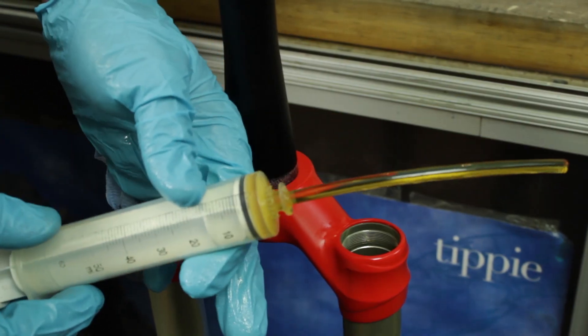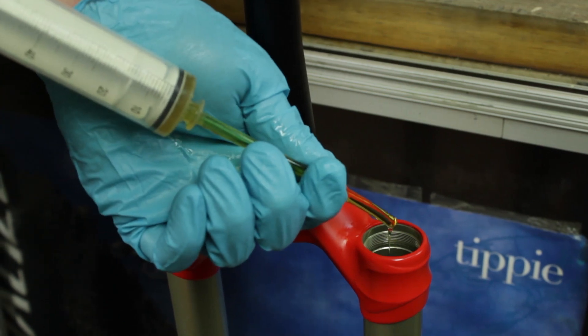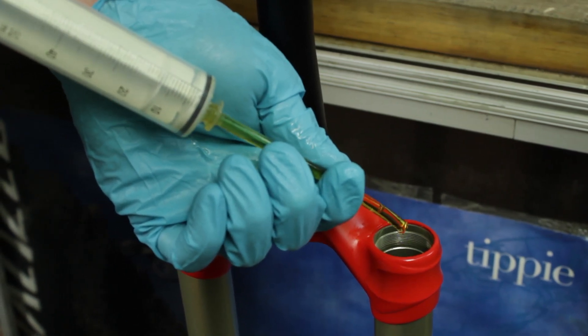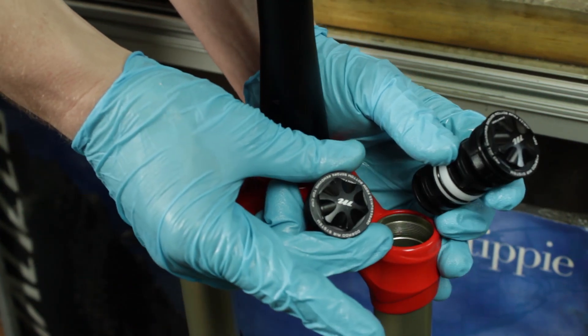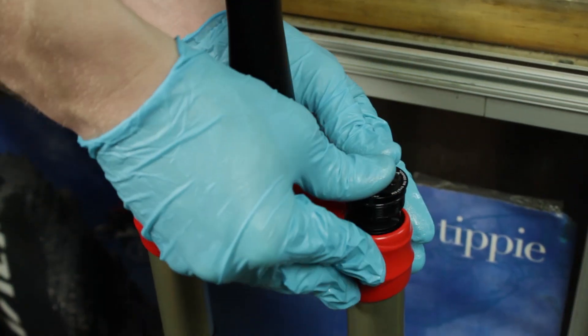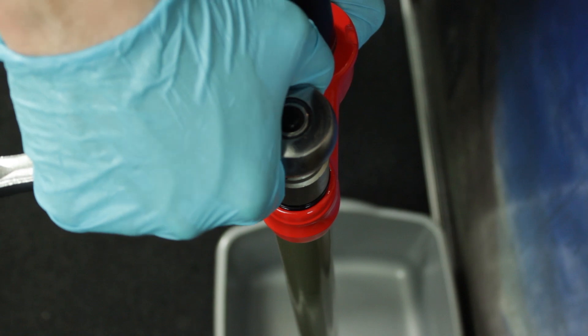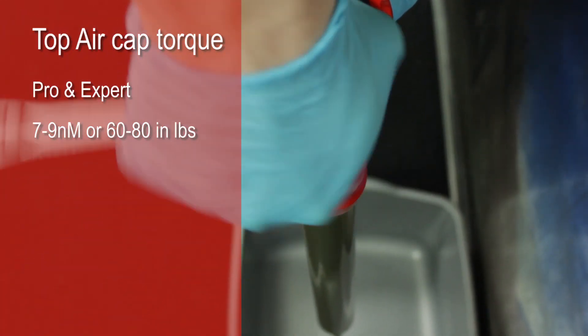Attach the shock pump, and with the air purge button depressed, fully extend the compression rod and place 3 cc or 3 milliliters of semi-bath oil on top of the air piston.